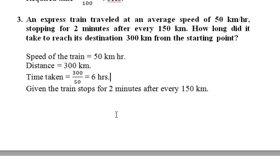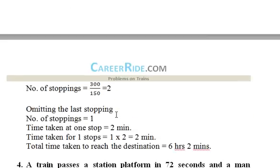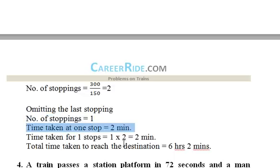The train stops for 2 minutes after every 150 kilometers, so the 300 km journey can be divided into 2 parts of 150 km each. The number of stoppings would be 2 — one at the midpoint and one at the end — but we omit the last stop, giving 1 effective stop. The time at that one stop is 2 minutes. Adding this to the 6 hours of travel time, the total time taken to reach the destination is 6 hours and 2 minutes.